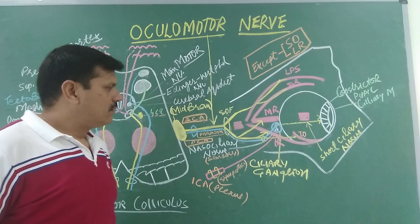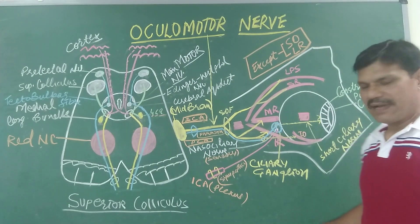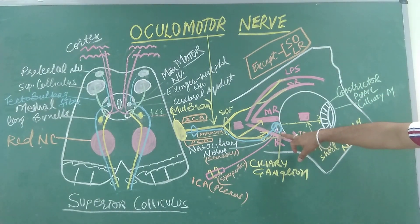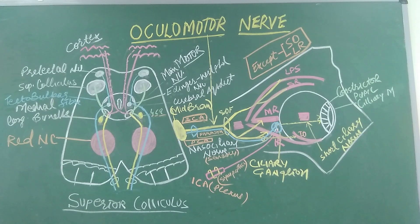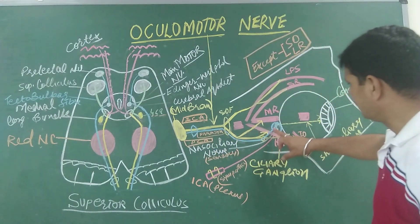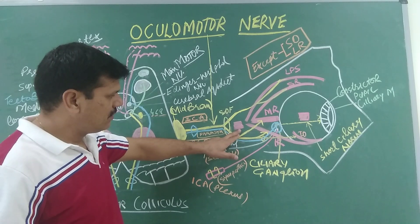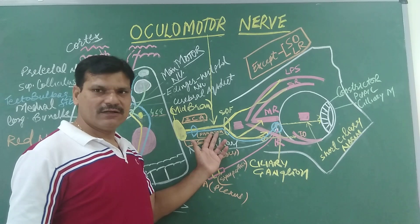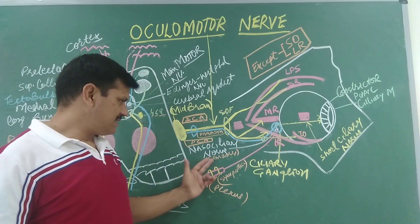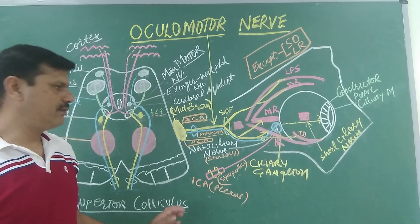The ciliary ganglion is the parasympathetic ganglion placed in the course of the oculomotor nerve, lying between the optic nerve and the lateral rectus muscle. It receives parasympathetic fibers through the oculomotor nerve, sensory fibers through the nasociliary nerve, and sympathetic fibers through the internal carotid plexus.